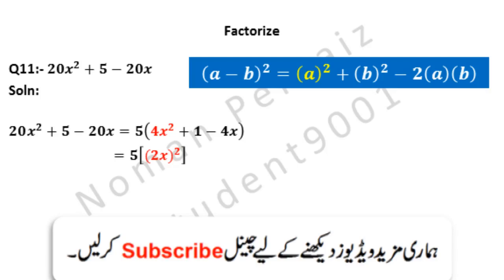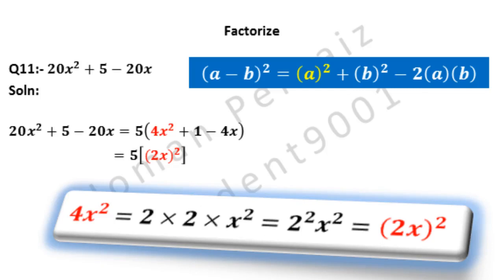4x² can be written as (2x)². 4 can be written as 2 × 2, because 2 twos are 4, then x². 2 multiplied with 2 becomes 2², and x² is written as it is. Because both 2 and x have same power which is 2, we write them as (2x)². And now look at formula above, this (2x)² is our a² also.